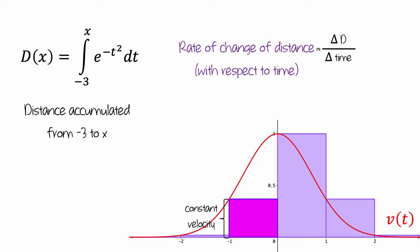When we do this, we're dividing the area of the bar by its width, which gives us its height, which is representing the velocity of the car.